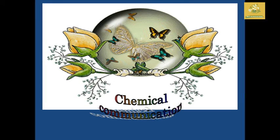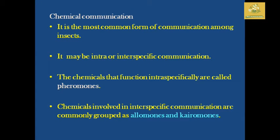The first mode is chemical communication, which is the most common form of communication among insects. It involves intra- or interspecific communication. The chemical functioning as an interspecific active substance is known as a pheromone — the chemical compound responsible for communication between insects. Chemicals involved in interspecific communication are grouped as allomones and kairomones.